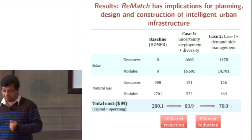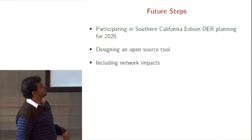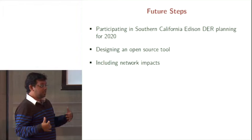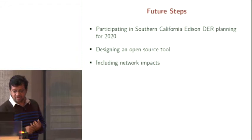For the future, we have started engaging with Southern California Edison in their distributed energy resources planning exercise. They like this tool because it enables them to include their estimates for demand response and demand side management. We are starting to make REMATCH into an actual software tool — right now it's just an optimization algorithm — and then we plan to include network impacts.